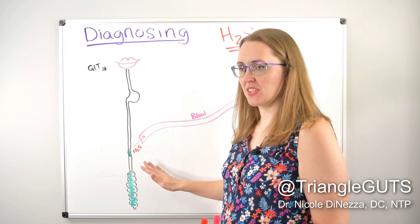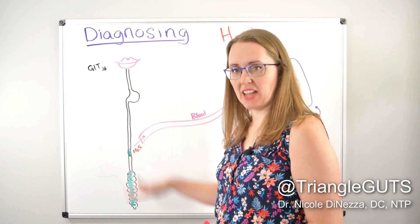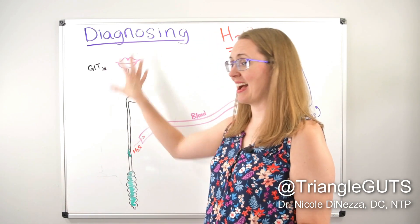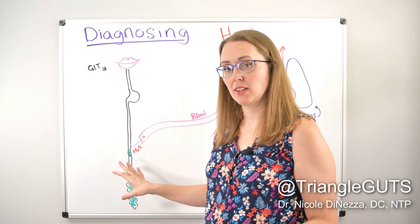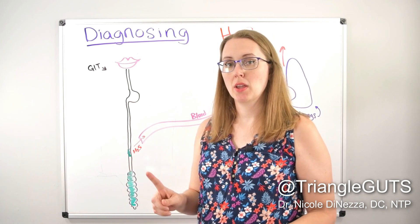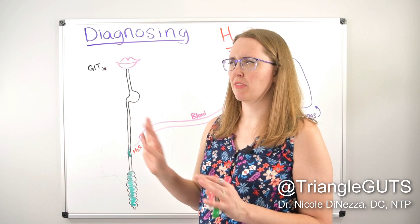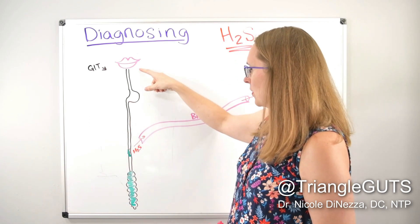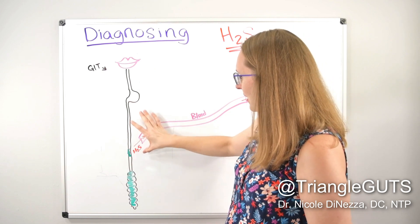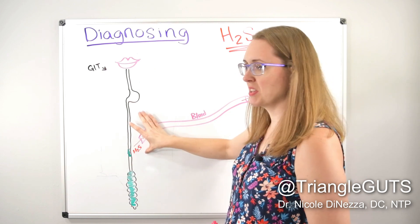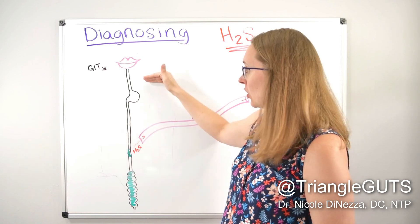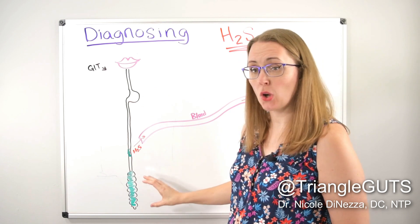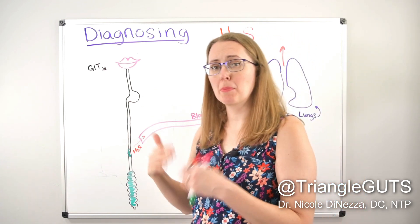The whole point of doing the breath test is the timing. If we wanted to just get a baseline measurement of gases being produced from the entire GI tract, we would just do a single sample. But we don't. What we're doing is looking for the peak to occur in a timeframe that tells us which section of the tube it's coming from. If it's too early, we're thinking upper GI tract. If it's coming too late, we're thinking it's from the colon and therefore it wouldn't be labeled as SIBO.